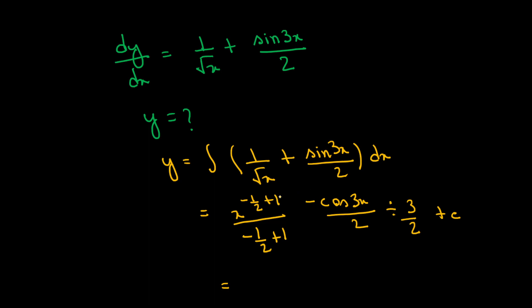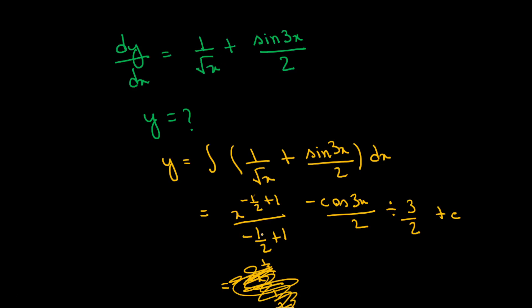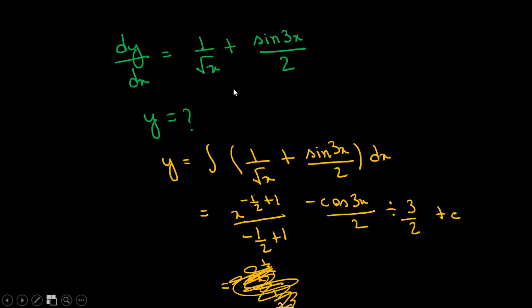x to the power minus half plus 1 is x to the power half divided by minus half plus 1. So x to the power half divided by half.